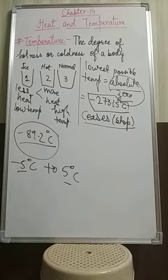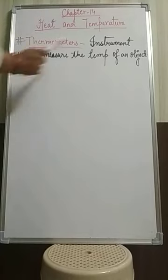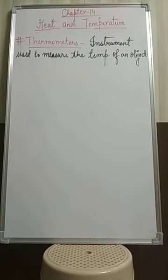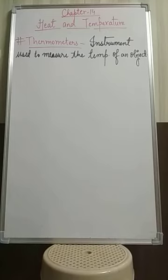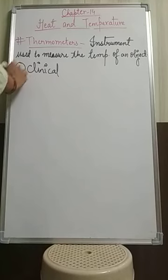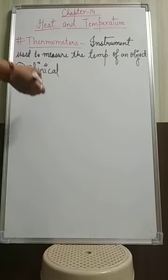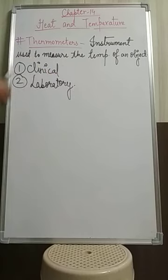Our next topic is thermometers. There is a device known as a thermometer, which is used to measure the temperature of an object accurately. In our day-to-day life, we come across two types of thermometers: the clinical thermometer, which is used to measure the temperature of the human body, and the laboratory thermometer, which is used in laboratories for various experiments. We will discuss these two types in detail in a later chapter.